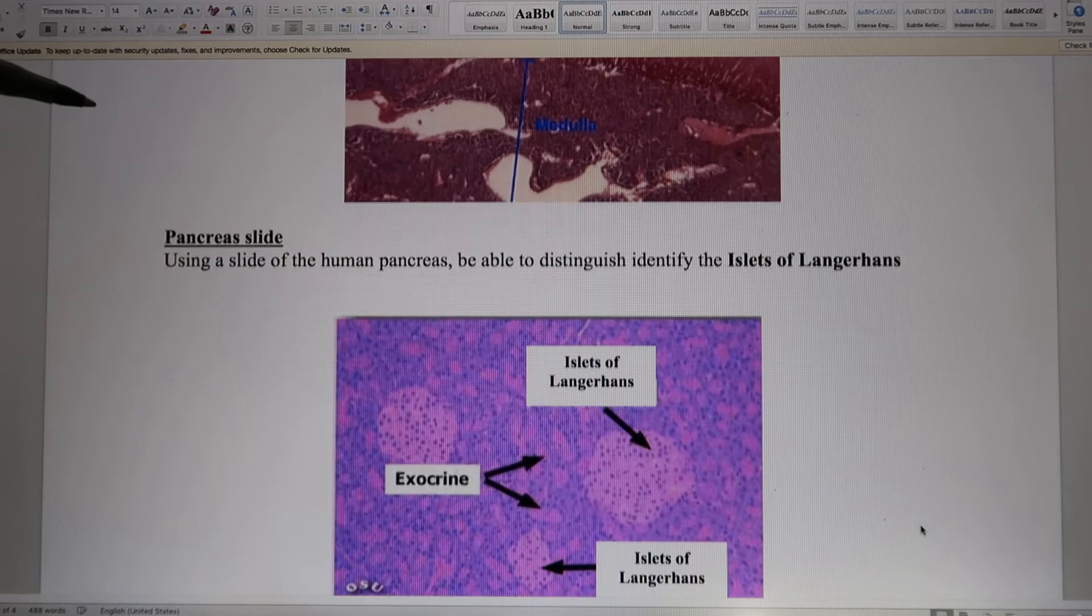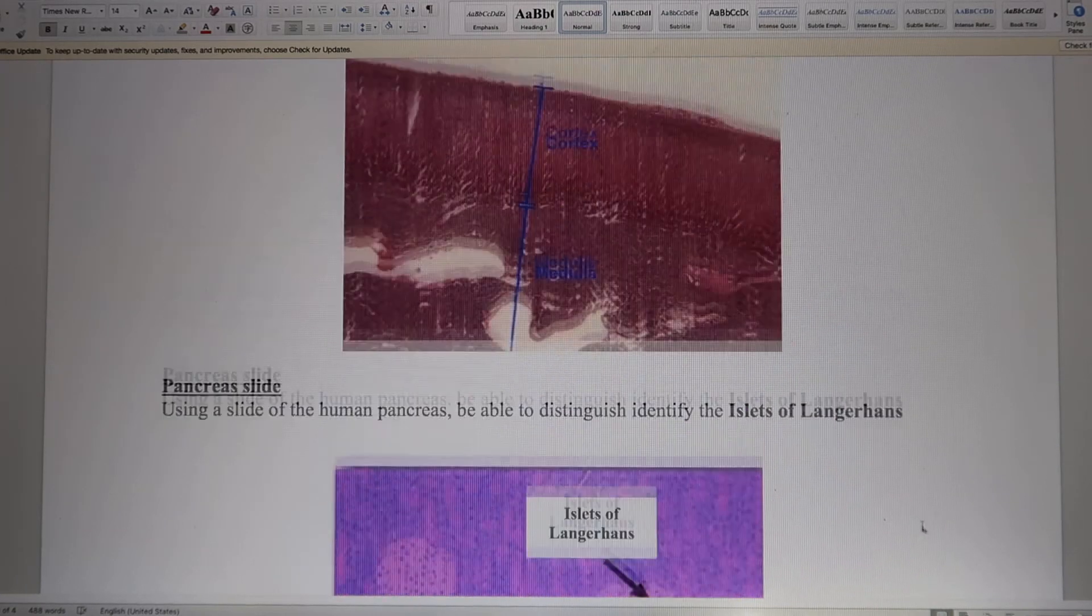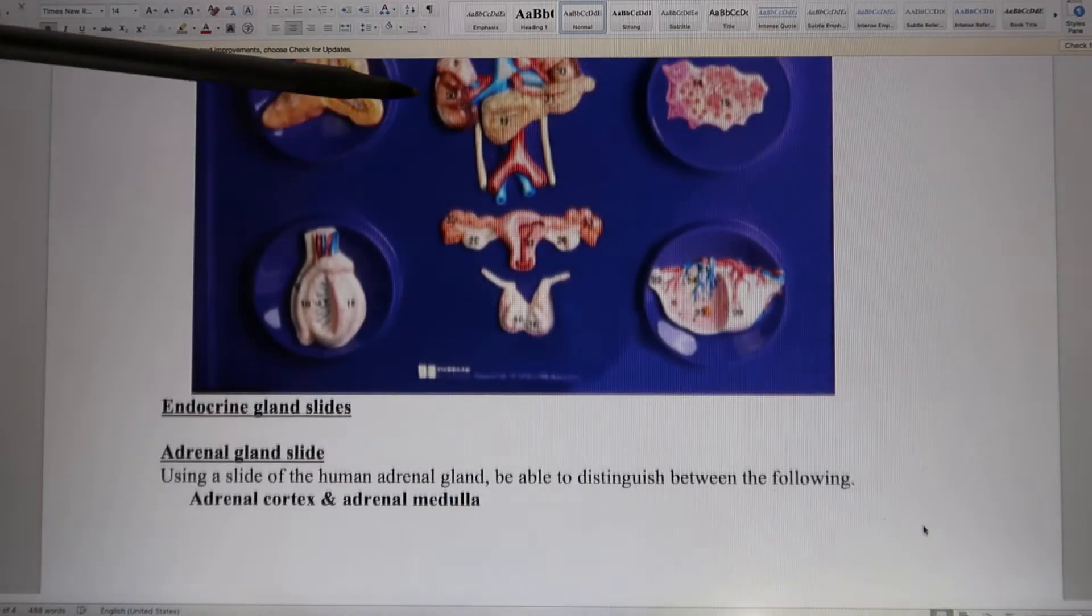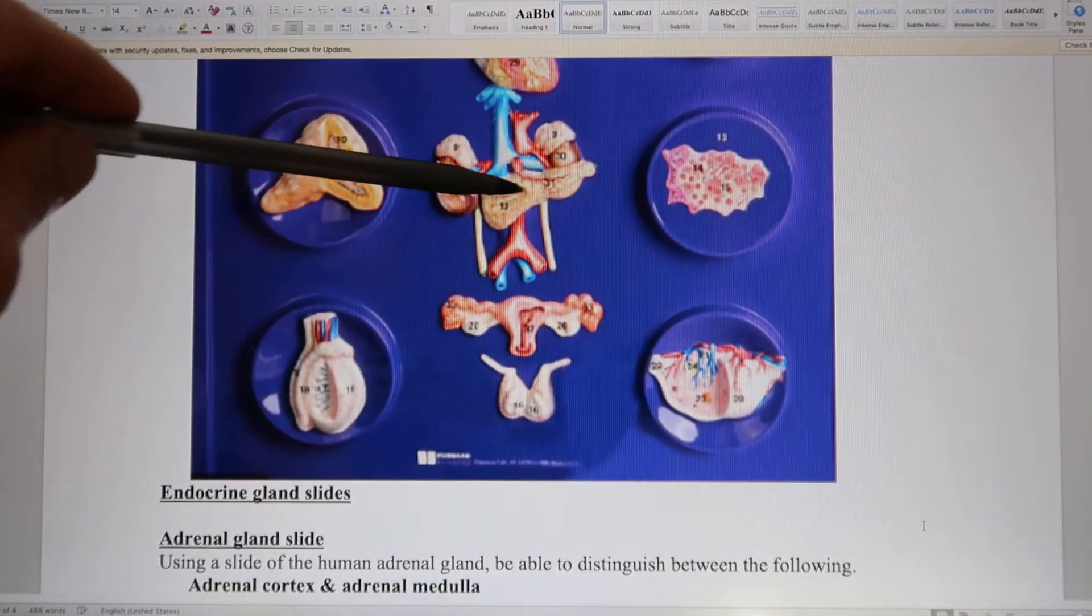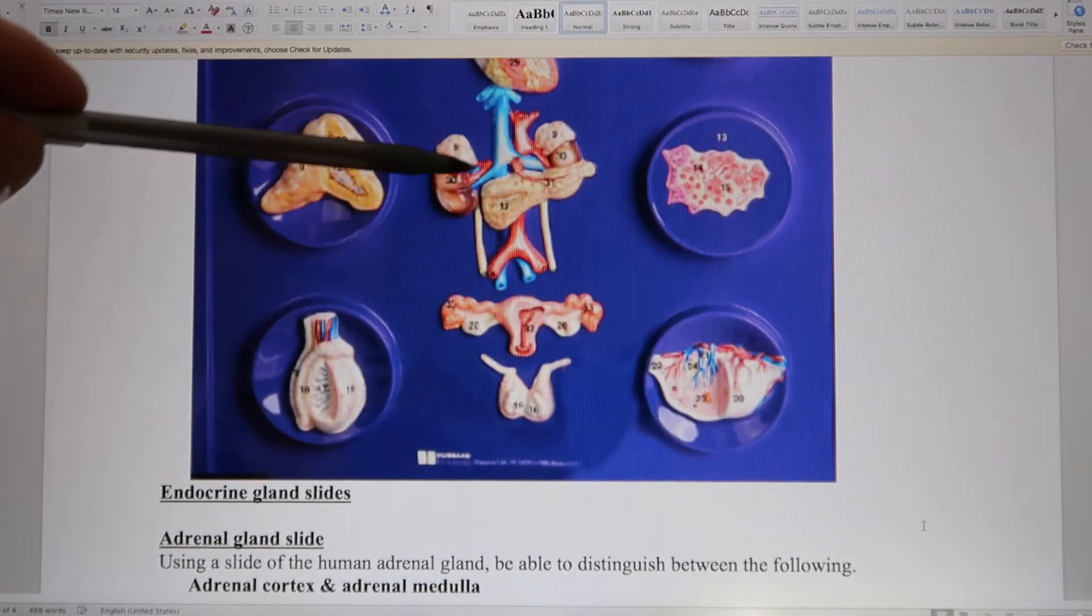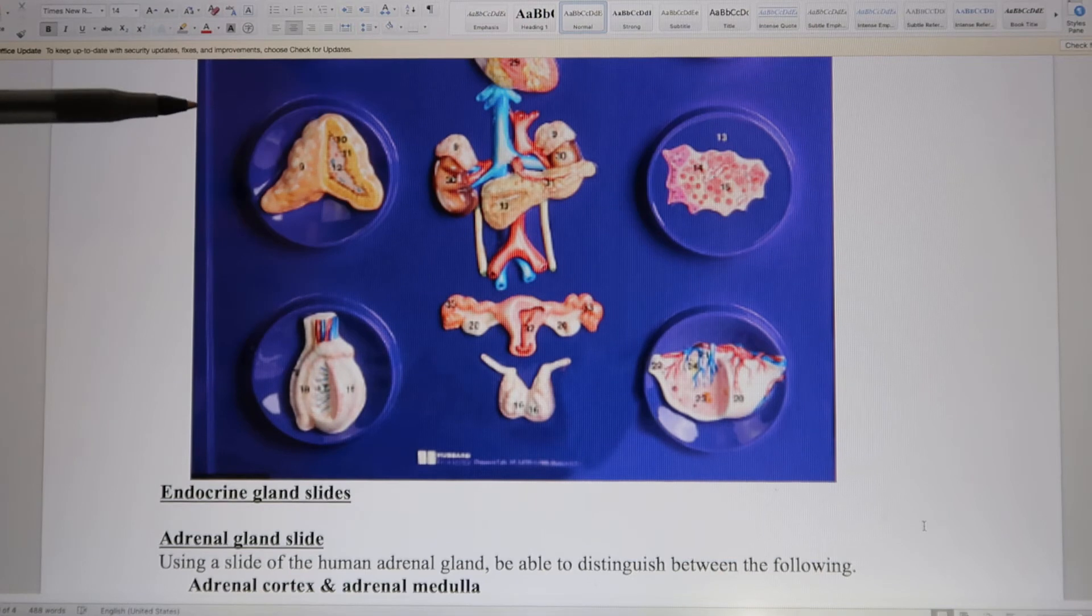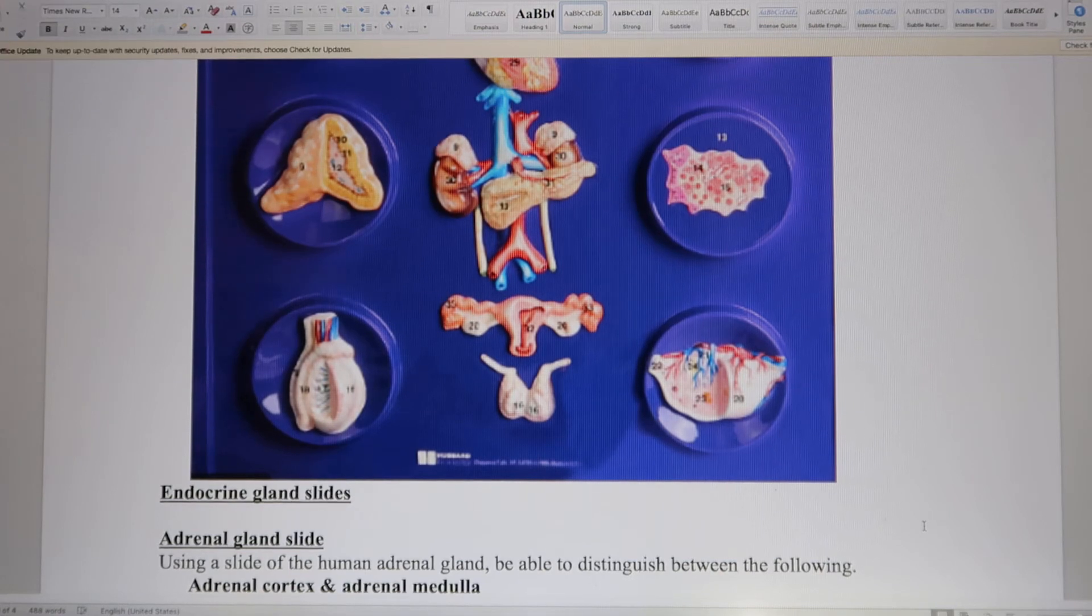Now let's look at the pancreas. So the pancreas looks like this. So this is the pancreas. Pancreas is both an endocrine and exocrine organ. So the exocrine part releases digestive enzymes to your duodenum, which is the beginning part of the small intestines.